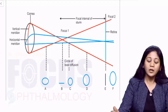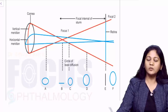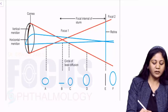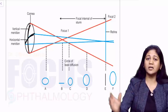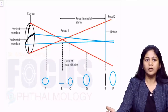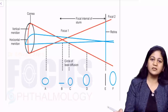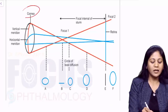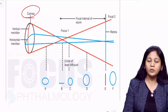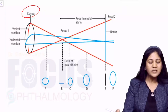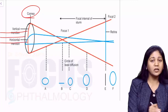A toric or astigmatic surface has a vertical meridian and a horizontal meridian — it has curvatures at two different meridians. When rays of light pass through it, this forms your Sturm's Conoid. Consider a cornea with a vertical meridian and a horizontal meridian where the refractive powers are not the same. The vertical meridian is more curved, so when parallel rays of light enter and pass through, they are focused earlier.